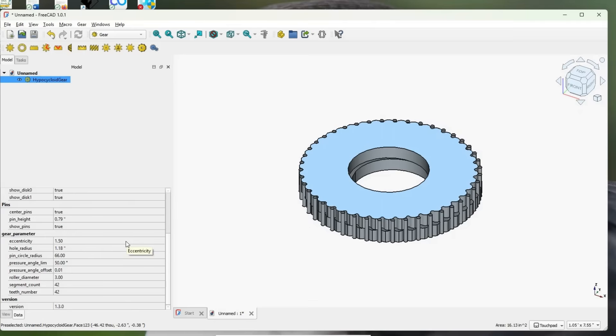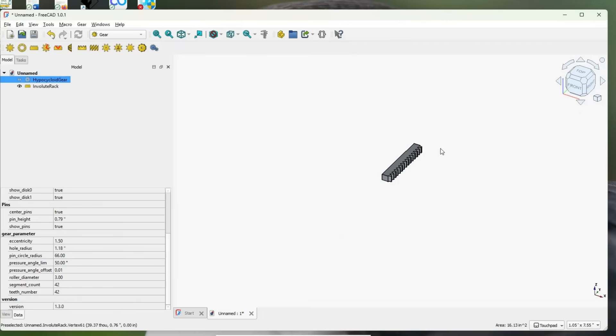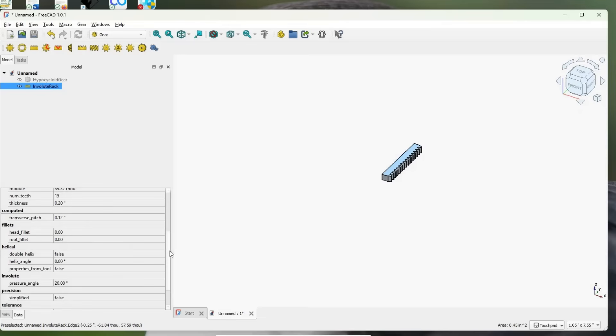Now the things we're interested in here because of the floating rack of course is the involute rack. So let's pull one of those up. Click on that, let's just hide that. There we go, click on that and we have an involute rack and we can see all of the things that we need to change.